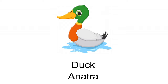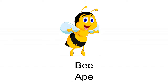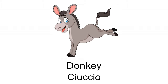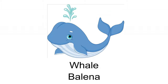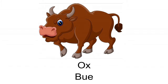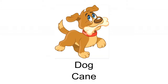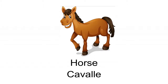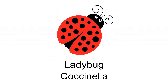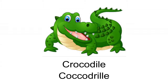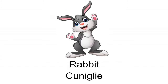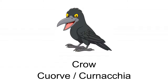Animals vocabulary: Duck — Anatra. Bee — Ape. Eagle — Aquila. Donkey — Ciuccio. Whale — Balena. Ox — Bue. Camel — Cammello. Dog — Cane. Goat — Capra. Horse — Cavallo. Ladybug — Coccinella. Crocodile — Coccodrillo. Dove — Colombo. Rabbit — Coniglio.